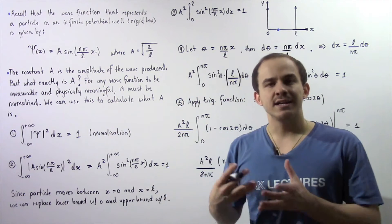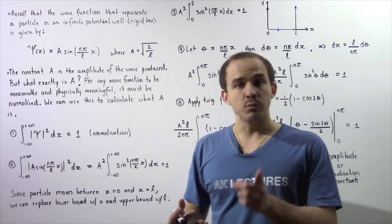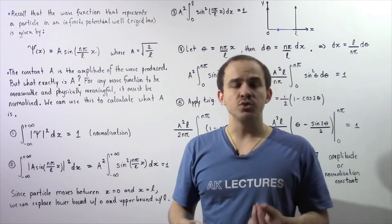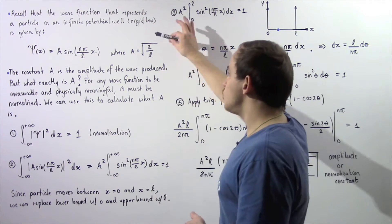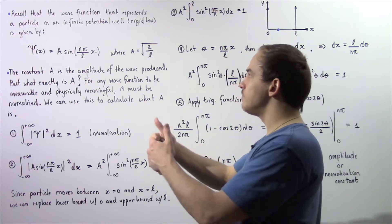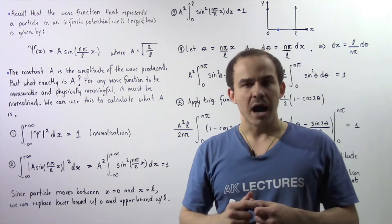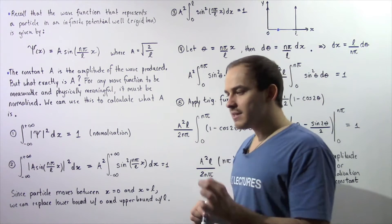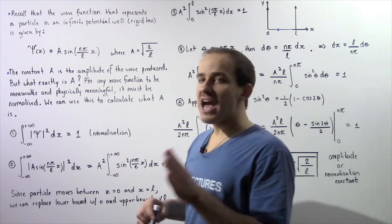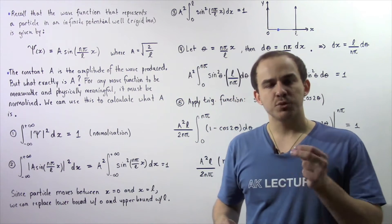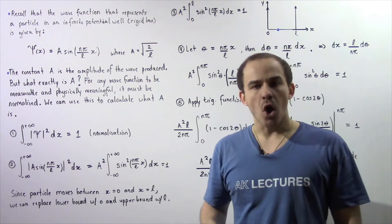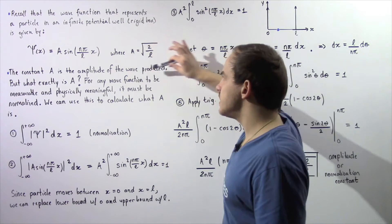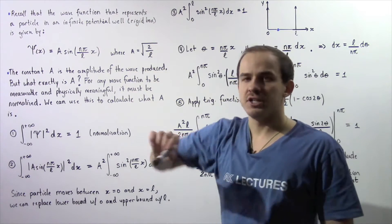A is a constant, and we saw in a previous lecture that A is equal to the square root of 2 divided by L, where L is the width of our box. We also said that constant A represents the amplitude of the wave produced by our particle. The question is: where exactly does this equation come from?